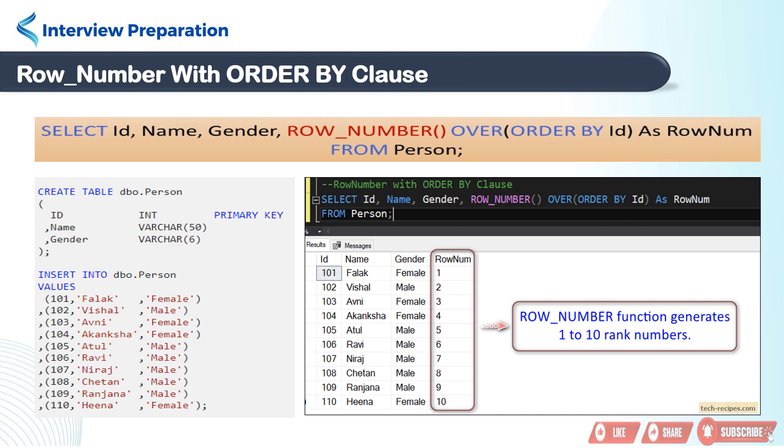So, it will sort the rows by ID column and assign a number to each row starting with 1 and increasing the value for subsequent rows. In this way, you can use ROW_NUMBER for assigning ranking in result set.